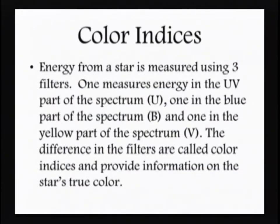Color indices involve looking at a star through three different parts of the spectrum — one in the ultraviolet, one in the blue, and one in the yellow — and combining information from these filters gives us information on the star's true colors.